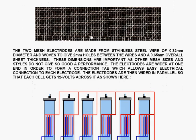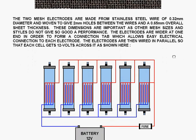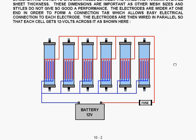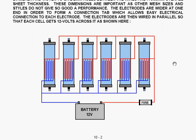The two mesh electrodes are made from stainless steel wire. It is wire which is 0.32 mm diameter and it is woven to give 2 mm holes between the wires and an overall sheet thickness of 0.65 mm. These dimensions are important as other mesh sizes and styles do not give so good a performance with this cell. The electrodes are wider at one end in order to form a connection tab which allows easy electrical connection to each electrode. The electrodes are wired in parallel so that each cell gets 12 volts across it.